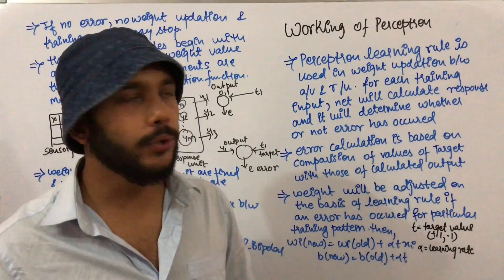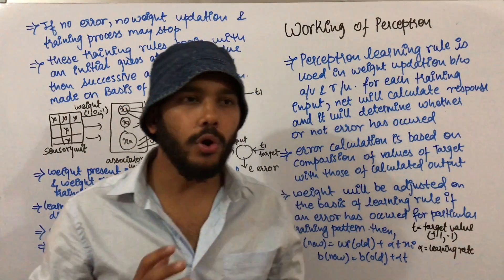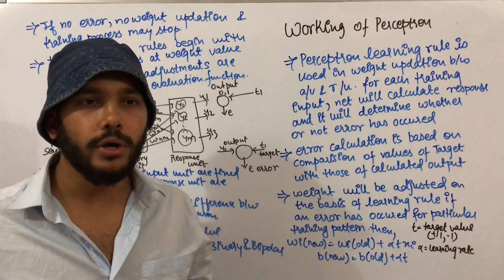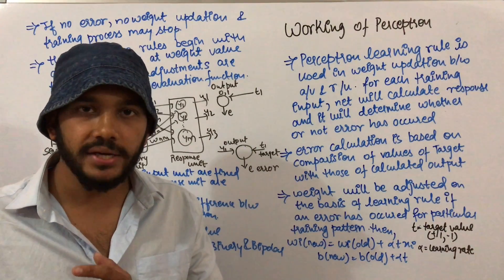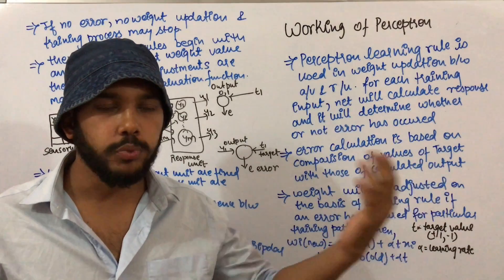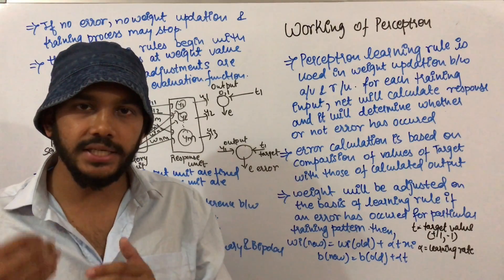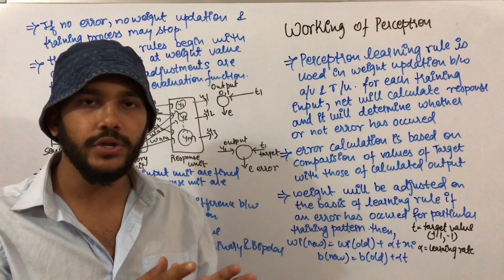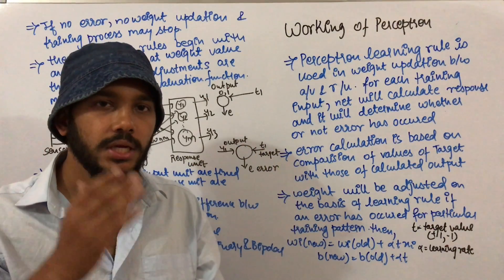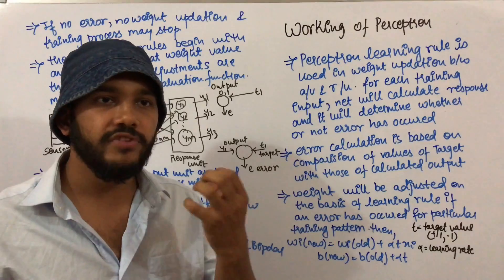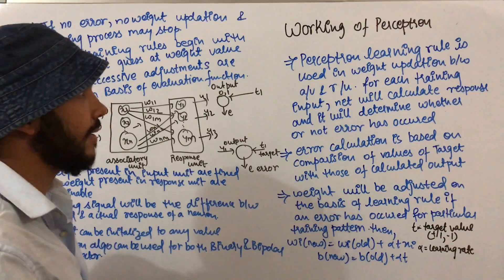In this video I am going to talk about the working of perceptron. Perceptron model is a learning algorithm which compares the weight calculated by the network with the target output. Whatever the difference is, it gives the error, and at each step the weight between the associatory unit and the response unit will be updated. Finally, when the error value is 0, we achieve the goal. Now, coming to the working of perceptron.